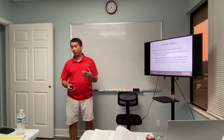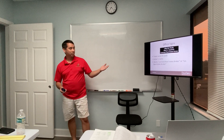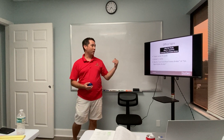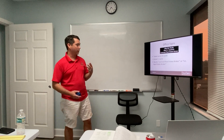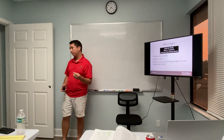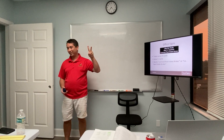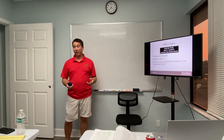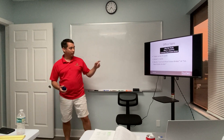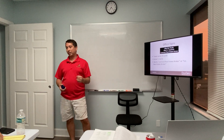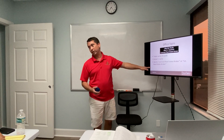On a real estate office sign, there are three required elements. Number one: the name of the company. Number two: the broker's name. Number three: the words 'licensed real estate broker' or 'Lic. real estate broker.' These are the only two acceptable ways it can be written, and this will be on the test.